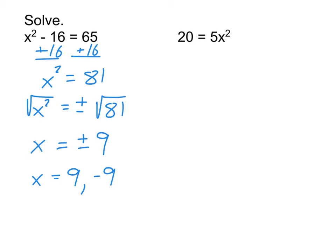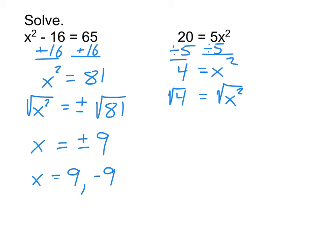For the second problem, I again need the squared part by itself first. I don't want to start by taking the square root of both sides — it would get messy. So I start by dividing both sides by 5, which gives us 4 equals x squared. Then we take the square root of both sides, and remember: plus or minus goes right in front of the square root of the number, outside the square root. That gives us plus or minus 2 equals x — in other words, x equals 2 and negative 2.